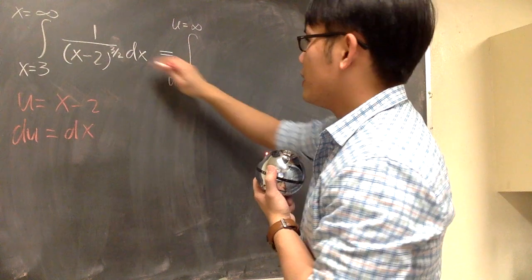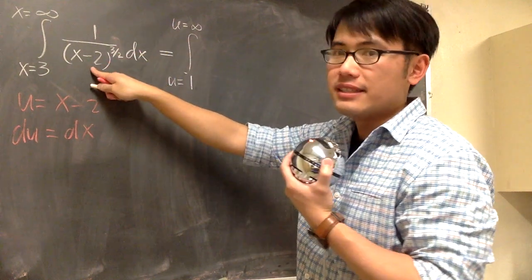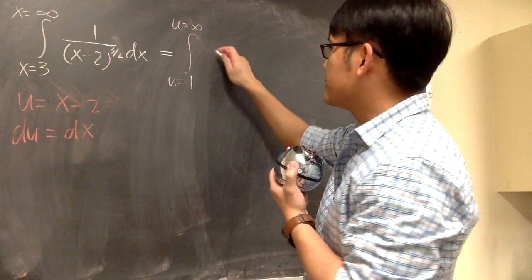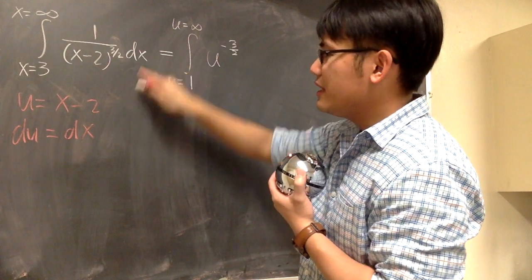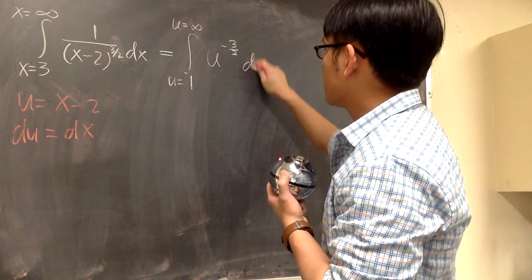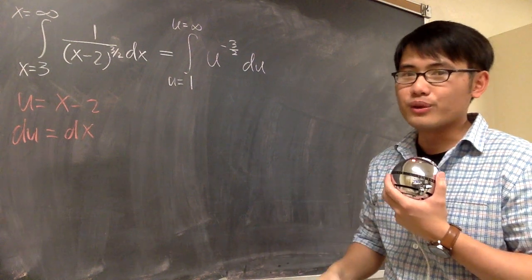Anyways, this is going to be 1 over u to the 3 half power. But this is on the denominator. Let me write this as u to the negative 3 half power. And dx is the same as du. Now this integral is completely in the u world.